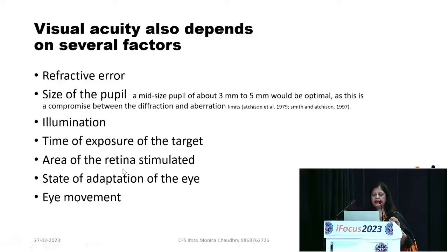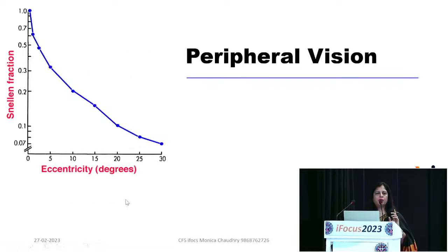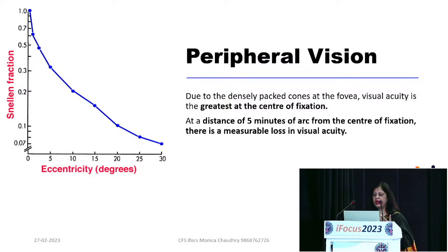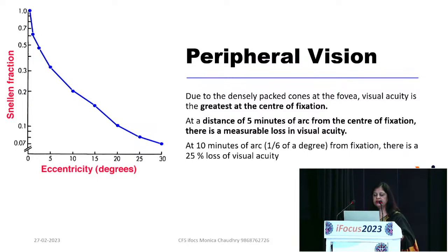Factors affecting visual acuity include refractive error, exposure of the target, area of retina stimulated, adaptation, and eye movements. Central vision is best, and as you move peripherally, the threshold drops significantly. At five degrees periphery there is already significant loss of visual acuity, and at ten degrees you are down to about 25% of normal visual acuity.